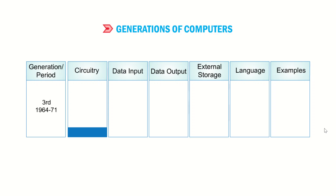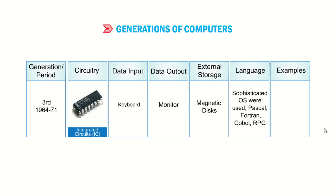Third generation computers, from 1964 to 1971, had circuitry of integrated circuits (IC). The data input operation was through keyboard, and data output operation through monitor. External storage was on magnetic disk. Languages used included sophisticated operating systems, Pascal, Fortran, COBOL, and RPG. Examples include IBM System 360, Apple One, and Altair.